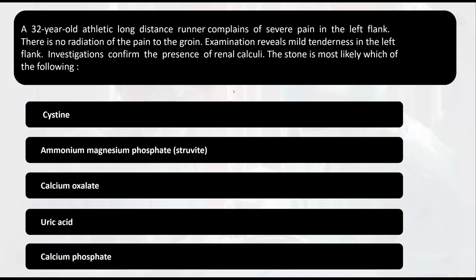Pain radiating to the ground on examination relieved tenderness in the left flank. Investigation confirmed the presence of renal calculi. The stone is most likely calcium. There are hereditary ammonium magnesium stones with recurrent inflammation or infection mainly from bacteria, uric acid stones related to gout or leukemia, or destructive calcium phosphate related to hypercalcemia — but calcium oxalate is the most common type.